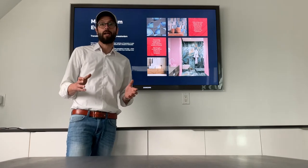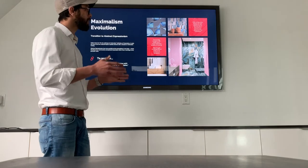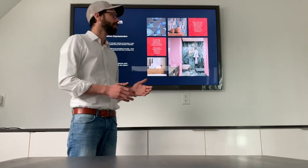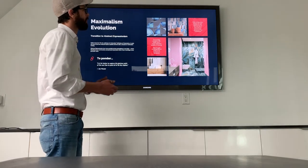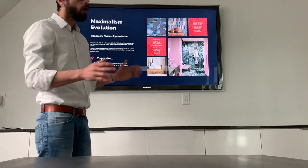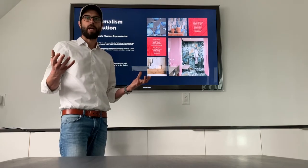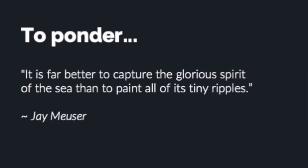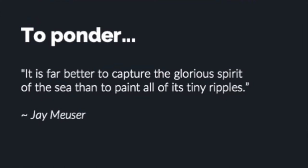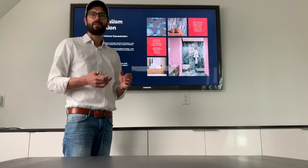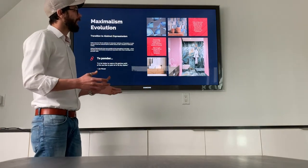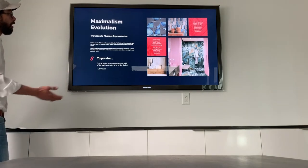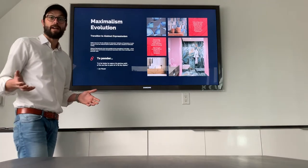Abstract expressionism was an interesting movement, mostly characterized by 1950s New York-based artists. There wasn't one unifying design style — there were action painters, simple color block painters, all sorts of different styles, and it translated into architecture as well. We're seeing a focus on harmony rather than dissonance in these broadly inspired compositions, which lends itself more to an abstract expressionist style. As Jay Muser said: 'It's far better to capture the glorious spirit of the sea than to paint all of its tiny ripples.' The focus is on getting the feel of the elements and creating a feel for the users of the space rather than cramming in a whole lot of stuff.